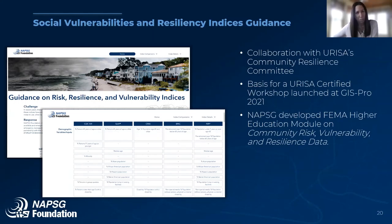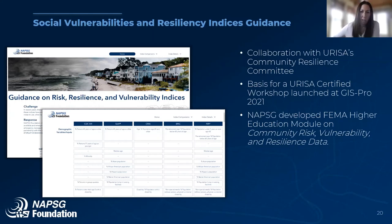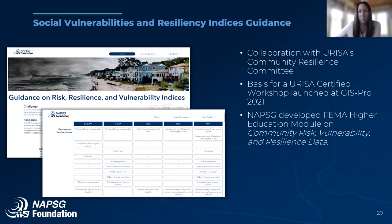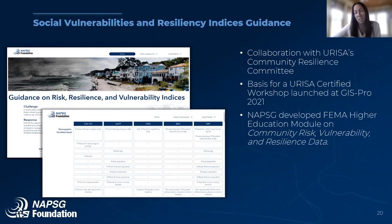The goal was to assist the emergency management and public safety community in quickly understanding which indices are available, the data methodologies behind them, and their relevance for use in preparedness and response. None of these indices is necessarily better than another — it can just take time to understand their methodologies. The guidance covers five indices that are publicly available, free of cost, national in coverage, and not hazard-specific. Since release, it has served as the basis for a URISA-certified workshop and led to NAPSIG's development of a FEMA higher education module on community risk, vulnerability, and resilience.